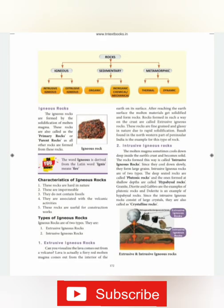Igneous rocks are formed by the solidification of molten magma. These rocks are also called primary rocks or parent rocks, as all other rocks are formed from them. The word 'igneous' is derived from the Latin word 'ignis' meaning fire. An example is volcanic lava — the lava that erupts from a volcano. The characteristics of igneous rocks are: they are very hard and unbreakable, they do not contain any fossils, they are associated with volcanic activities, and they are useful for construction work.